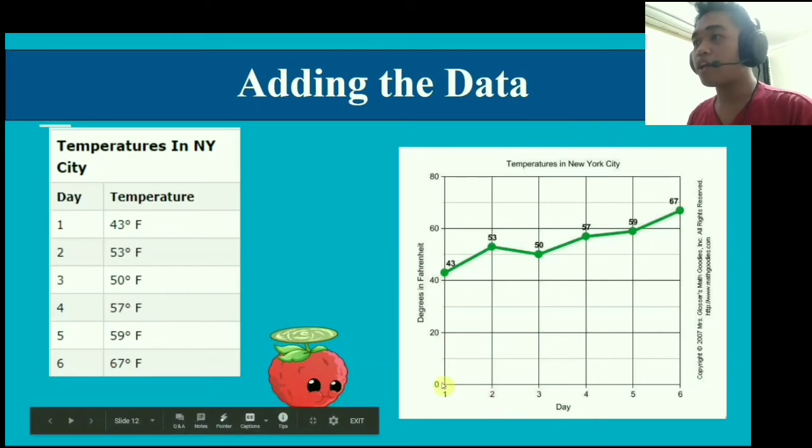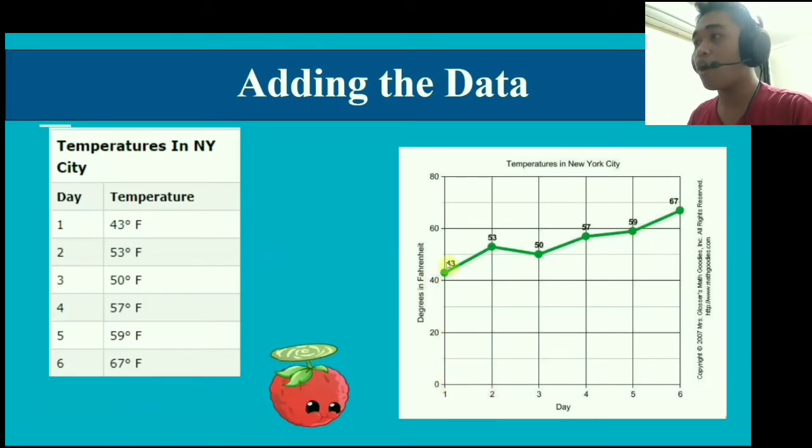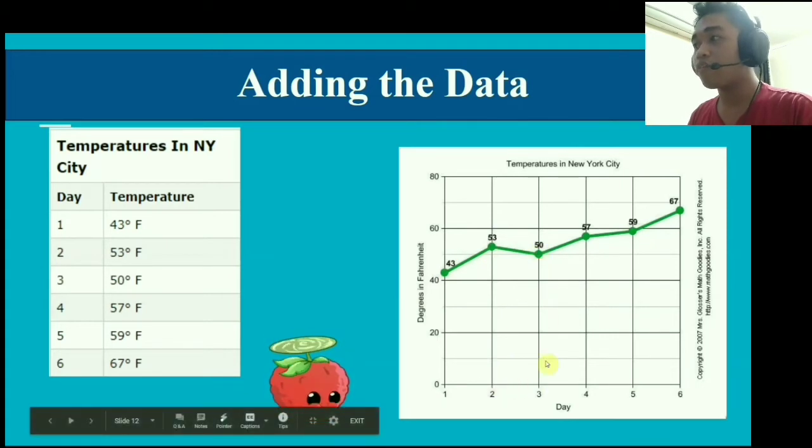First, on the x-axis, we have day one. Then we find the y-axis, which is the temperature at 43 degrees Fahrenheit. 43 degrees would be in between the 40 and 60 interval, but much closer to 40 since 43 is closer to 40. Then we follow that with day 2, 53. Day 3, 50. Day 4, 57. Day 5, 59. Day 6, 67.